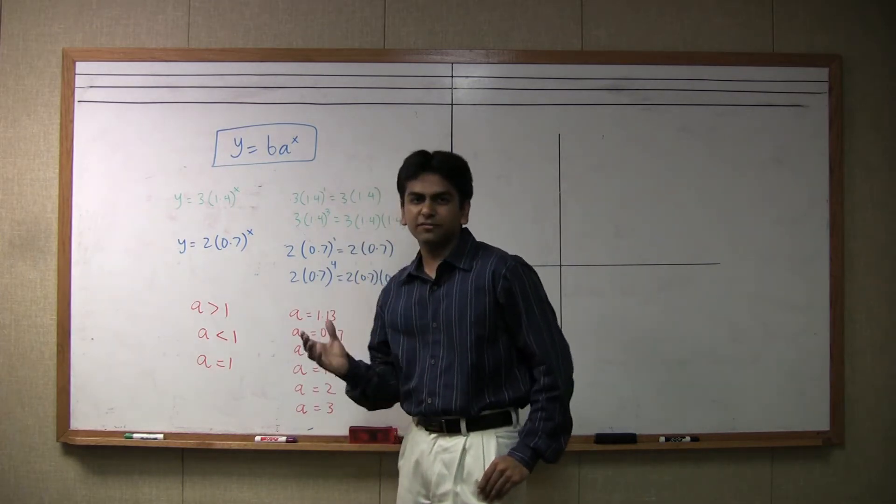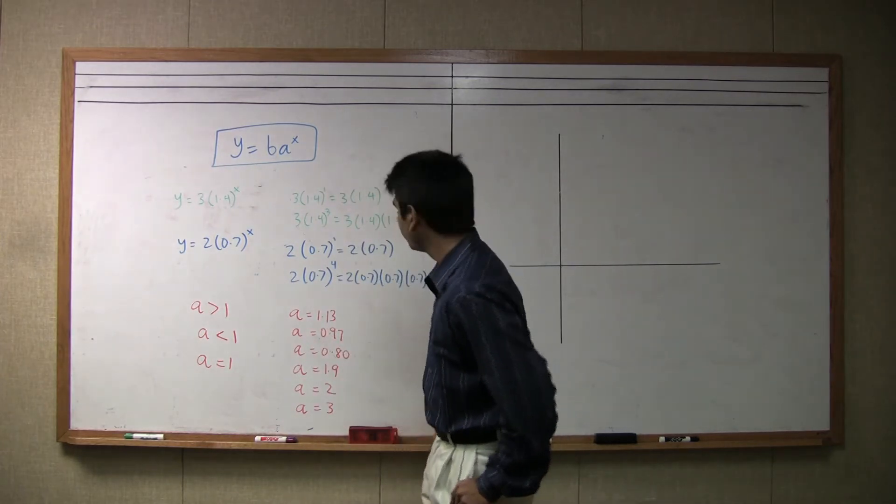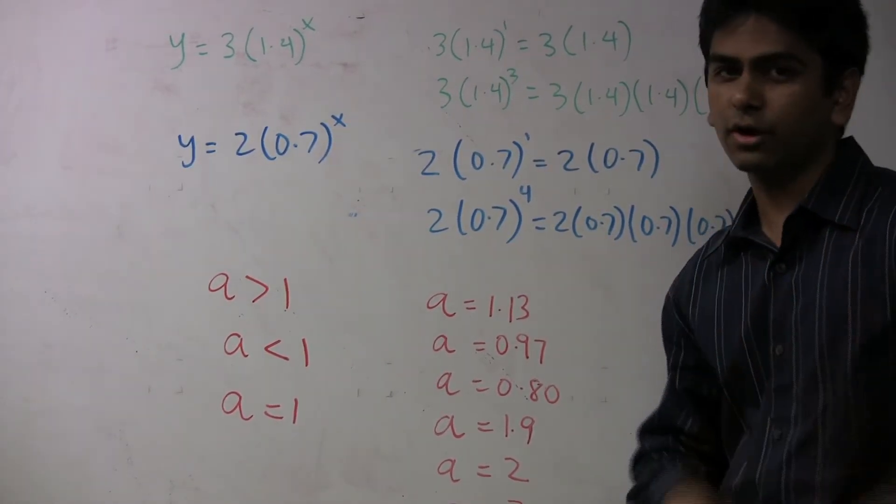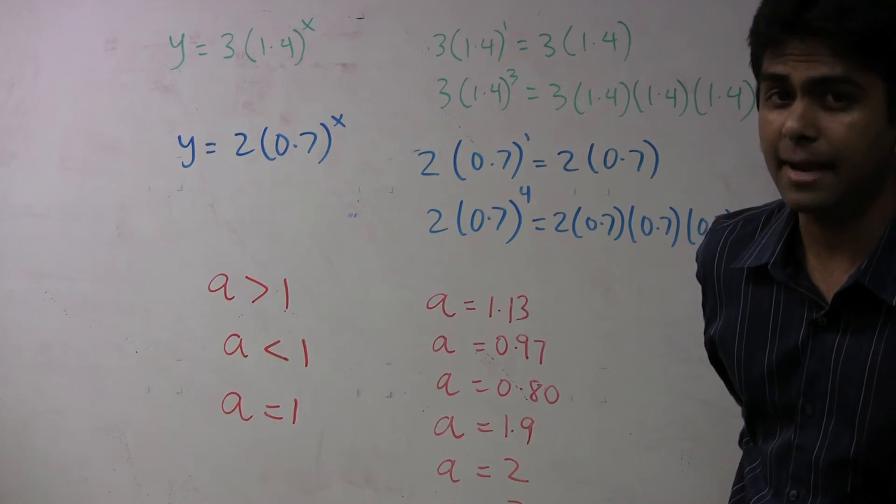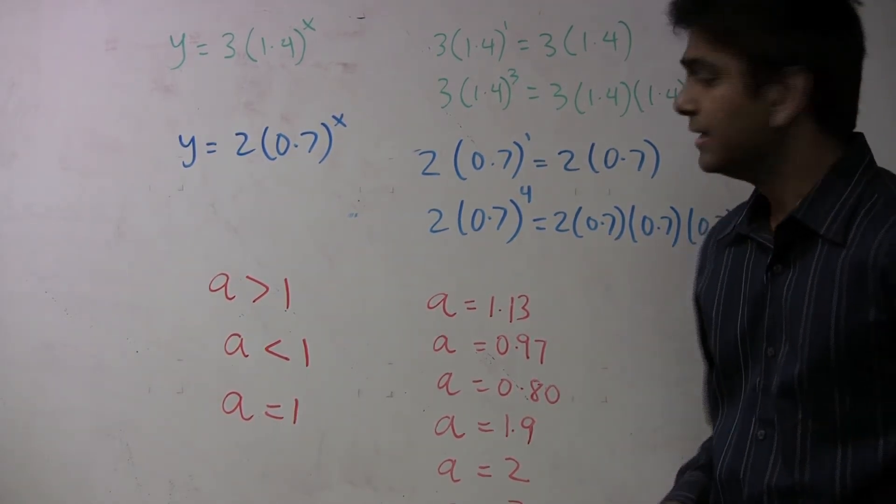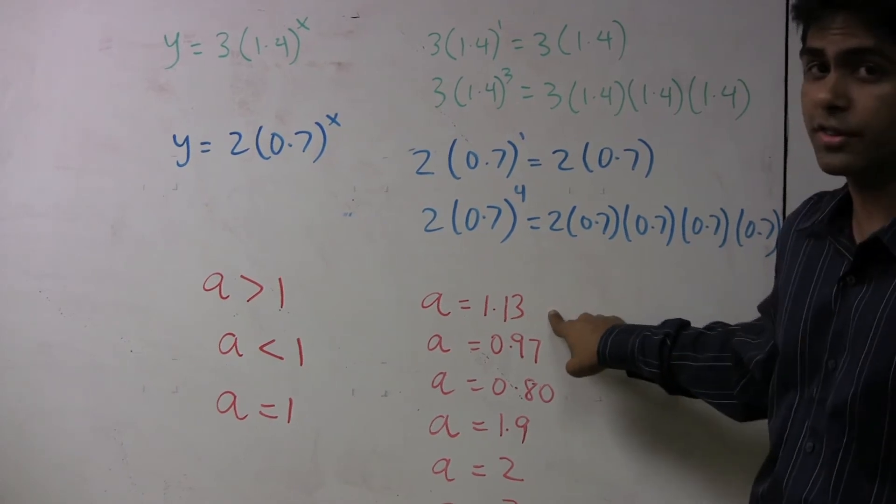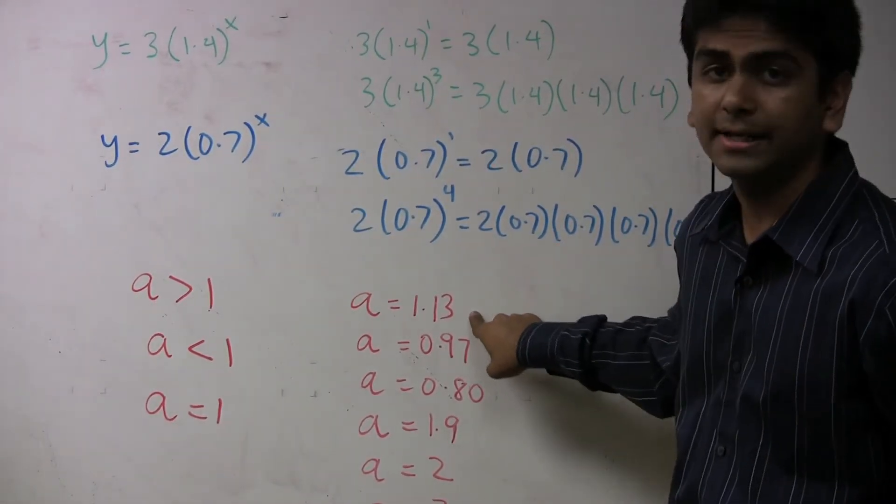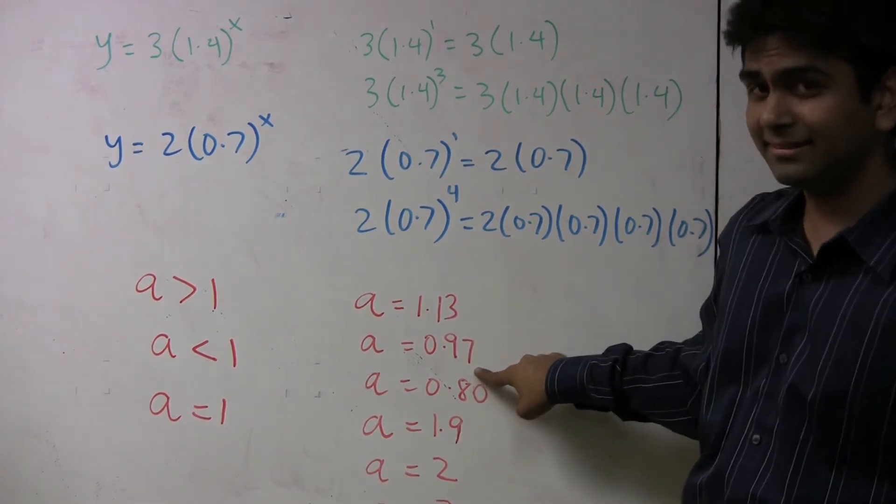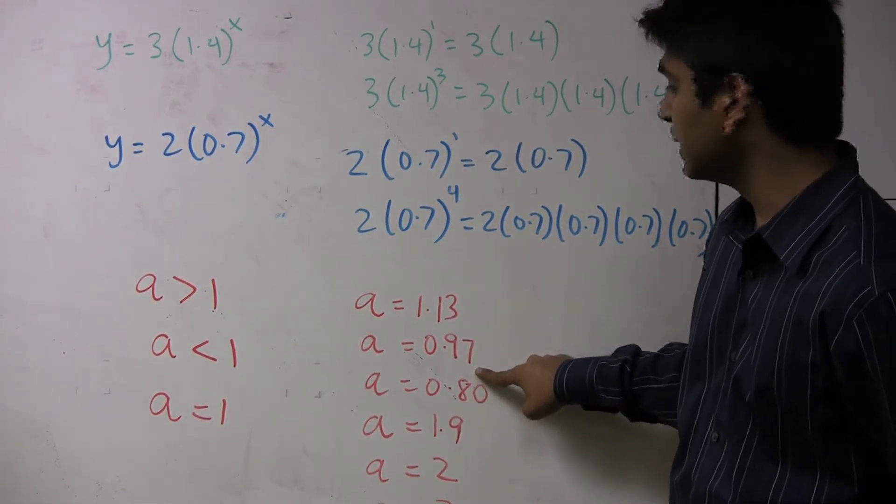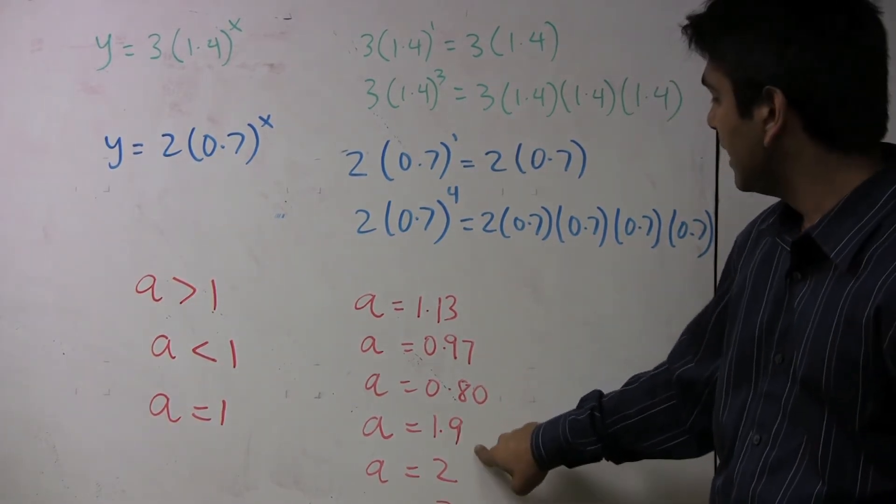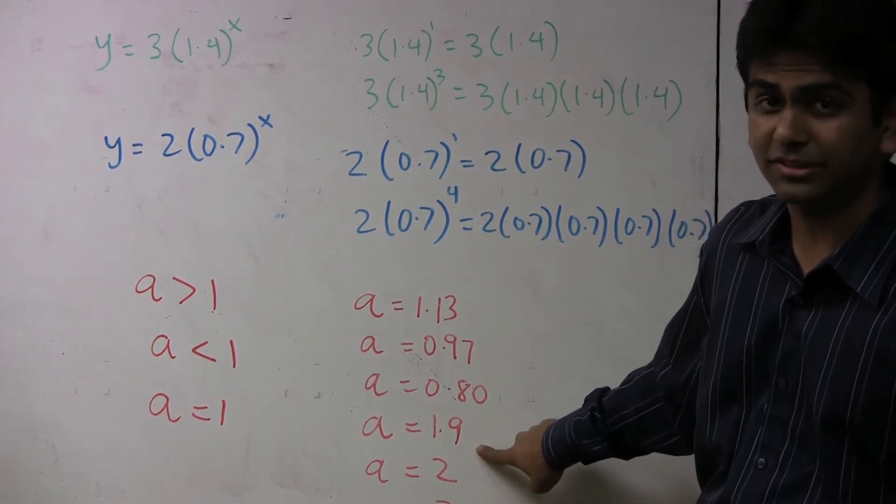Now, let's take a look more specifically at what this a value means. What if a is 1.13? We know it's exponential growth, but how much is it growing by? Well, the trick is to look at how far away a is from one. This is 0.13 more than one, so this will be growing by 13%. This is 0.03 less than one, right? And so it will be decreasing by 3%. Similarly, this is decreasing by 20%. This is increasing by 90%.